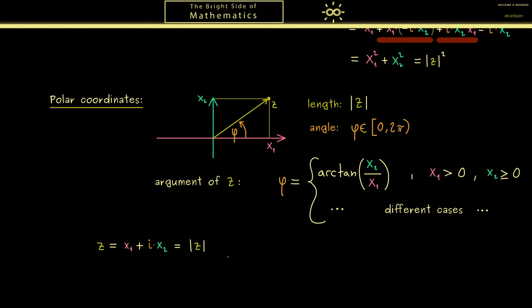But now we can also say it's the length times the cosine of the angle φ. Because this gives us the part on the x-axis. So x₁ plus i times sine of our angle φ.